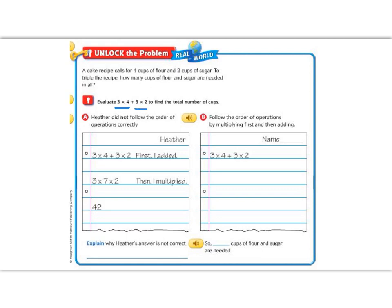So we're going to do this two different ways. One way is correct and one way is not correct. Heather is not correct. She did not follow the order of operations. Let's see what she did.